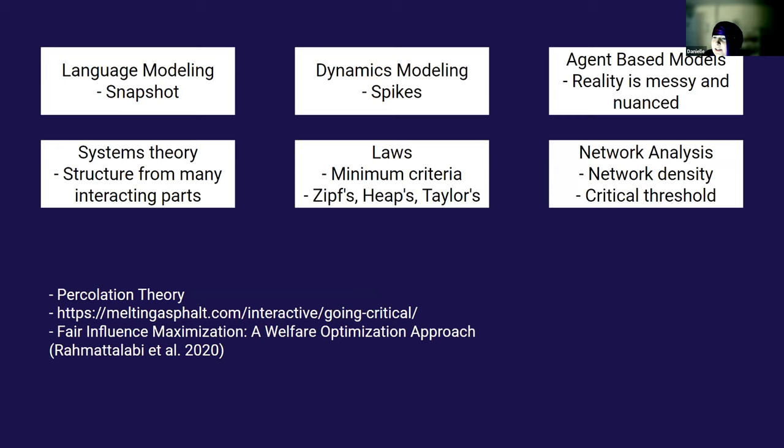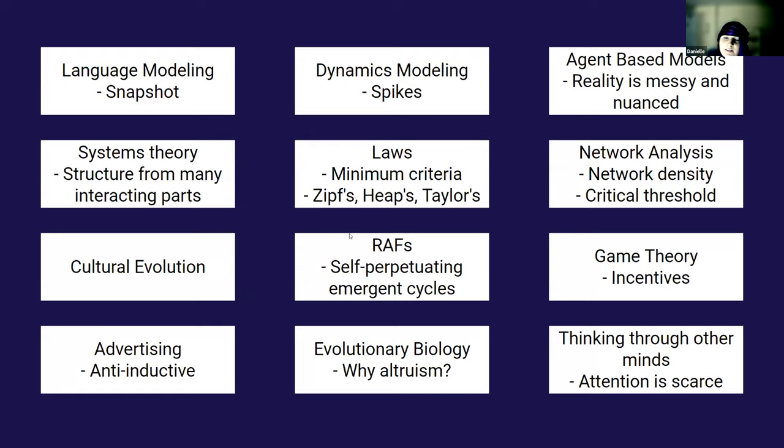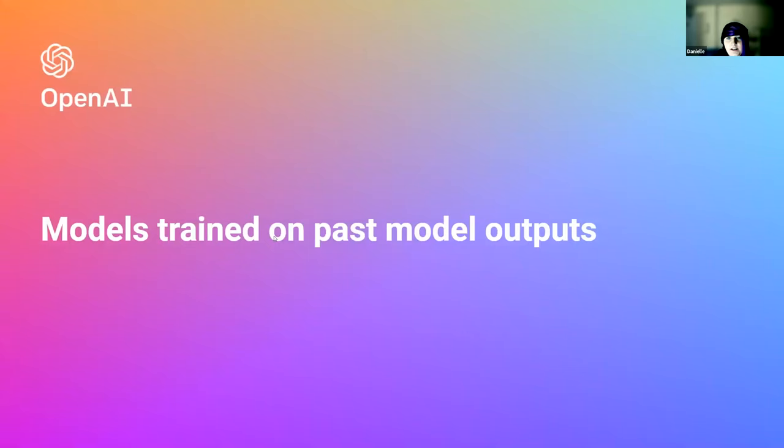In particular, we decided to study a problem where you have models outputting data that's fed back into the models themselves. Concretely, right now there are models like GPT-3 outputting text going on the internet, and that data is going back into future models. It would be good to understand what things we should be worried about here.